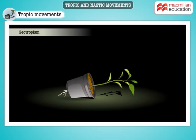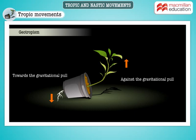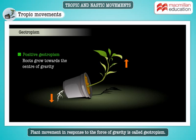Let us place this potted plant horizontally for a few days, using a pot that is open on both ends. We see that the roots have grown downwards towards the gravitational pull, while the shoots have grown upwards against the gravitational pull. Plant movement in response to the force of gravity is called geotropism. The roots are positively geotropic, while the shoots are negatively geotropic.